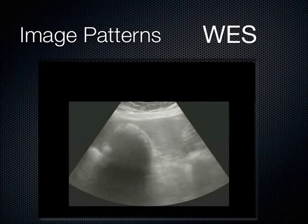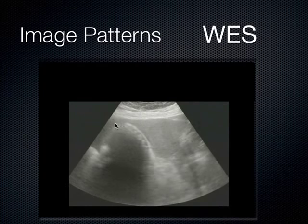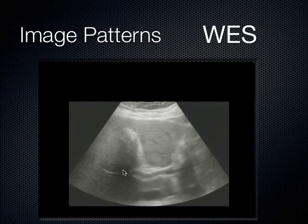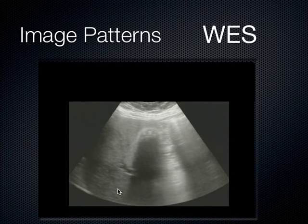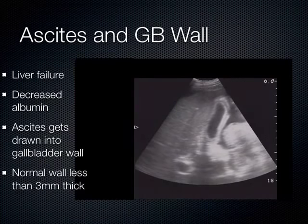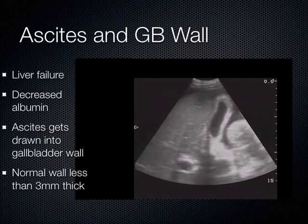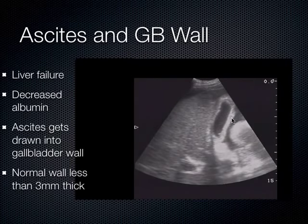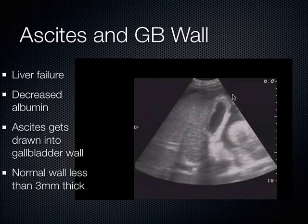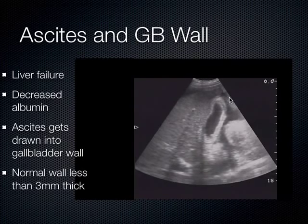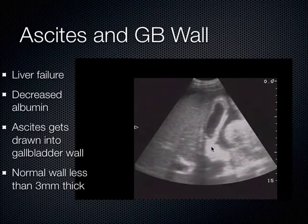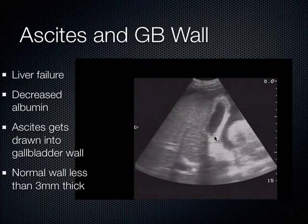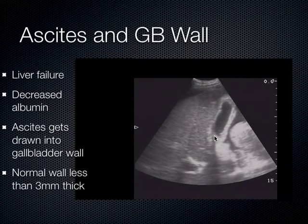This is actually a true WES sign — a contracted gallbladder around a whole bunch of stones whose collective shadows cast a big shadow out of the liver. When you have ascites — where the liver stops working and fluid third-spaces into the peritoneal cavity — it leaches into the gallbladder wall, and patients with ascites almost always have very thickened gallbladder walls. A normal gallbladder wall should be less than 3 millimeters thick.